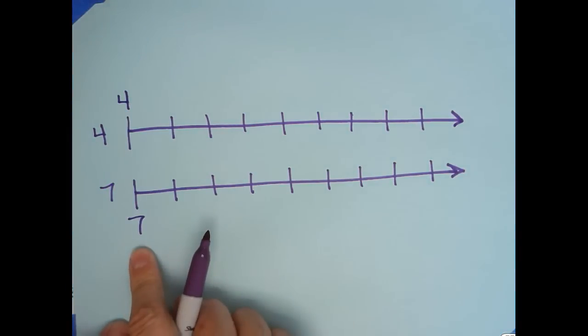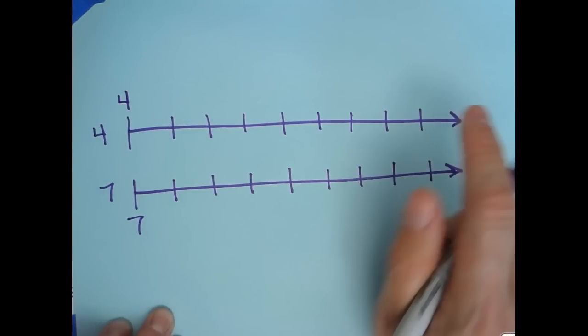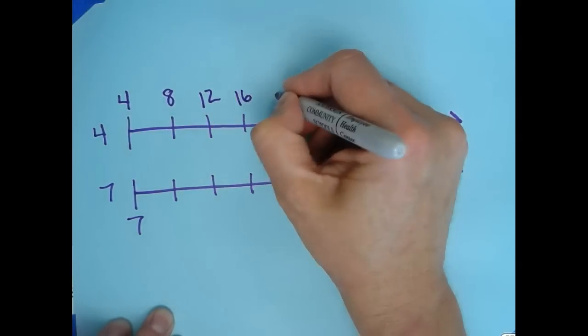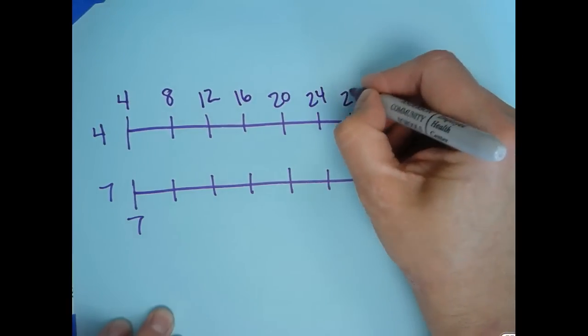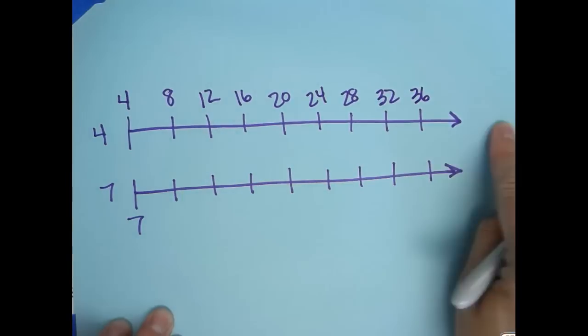To find out how many goes in each group here, we just keep counting by fours: 12, 16, 20, 24, 28, 32, 36, and it would just continue on.